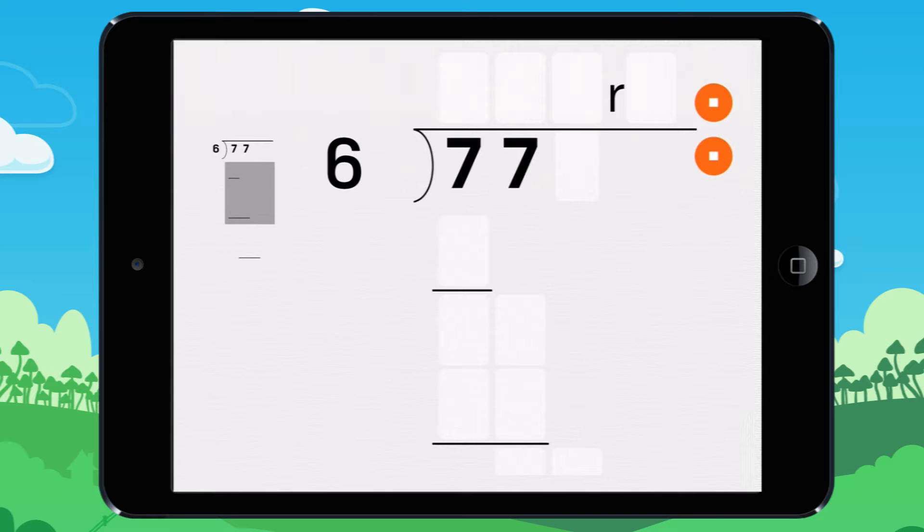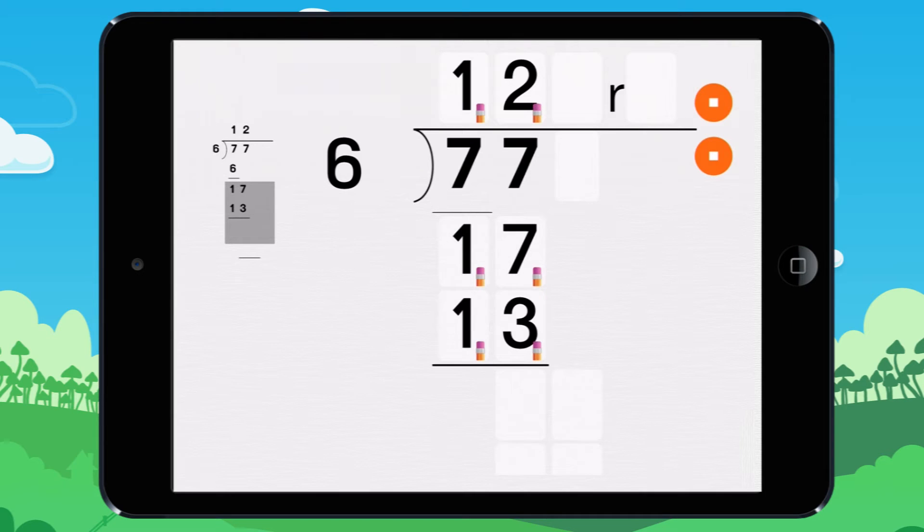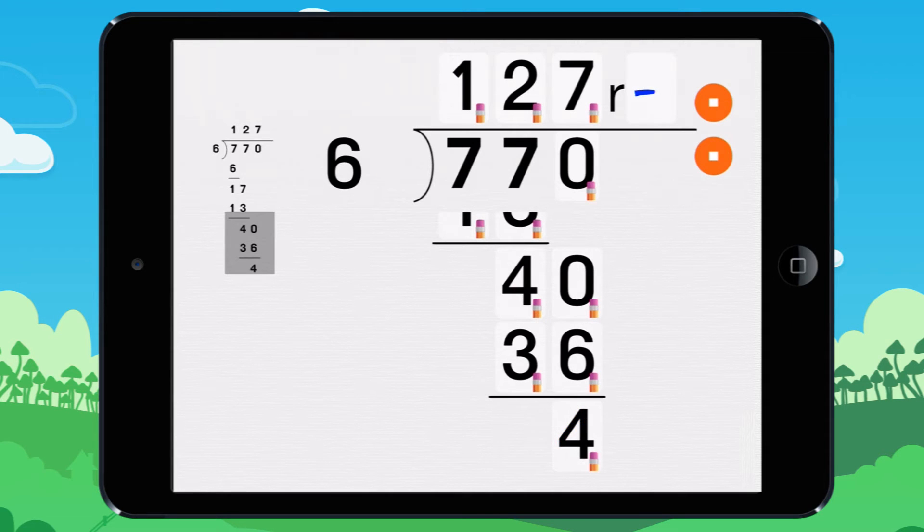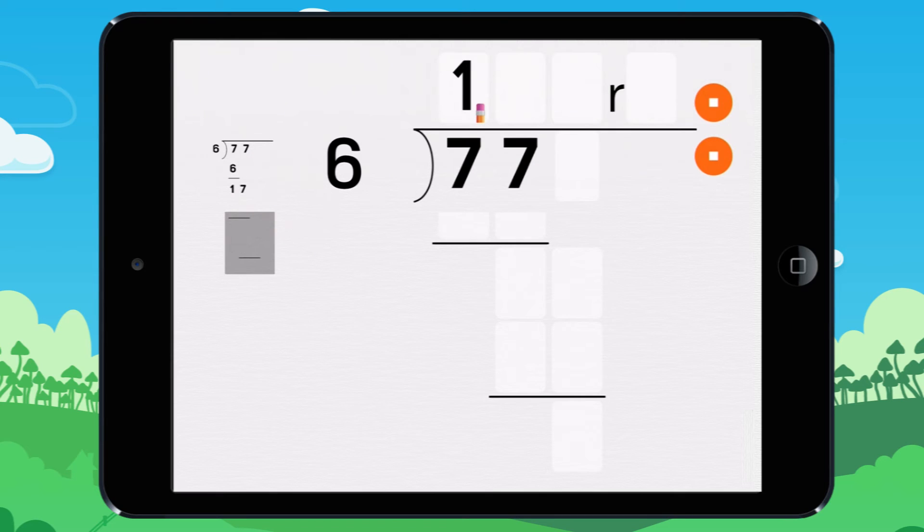Find the answer to this division to the tenth decimal place. Look at it together. How many times does 6 go into 17? It goes into it 2 times because 2 times 6 equals 12.